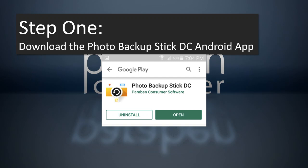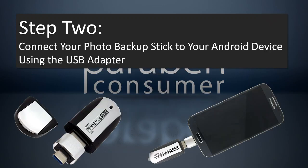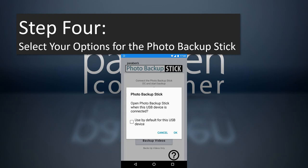The first thing you're going to do is go to the Google Play Store and search for the Photo Backup Stick DC app by Paraben Consumer Software. Once installed, hit open. Next, connect your Photo Backup Stick to your Android device using the USB adapters that are included — we include both the standard micro USB as well as a USB Type-C connector. If you're not sure which one to use, check your charging cable and match it up to the two different adapters. Then connect it to your device. When prompted, tap to open the Photo Backup Stick when this USB device is connected and hit OK.